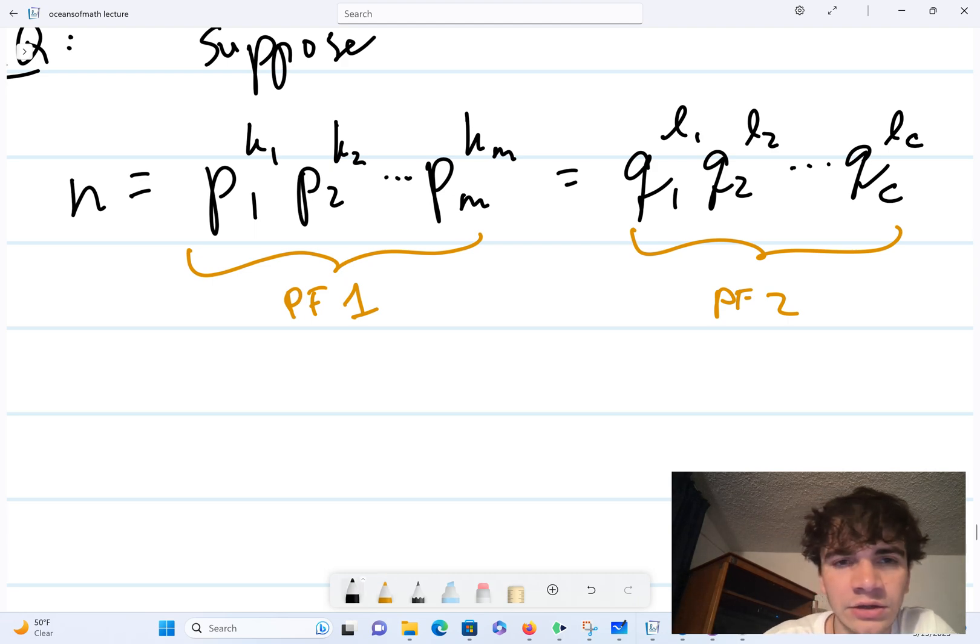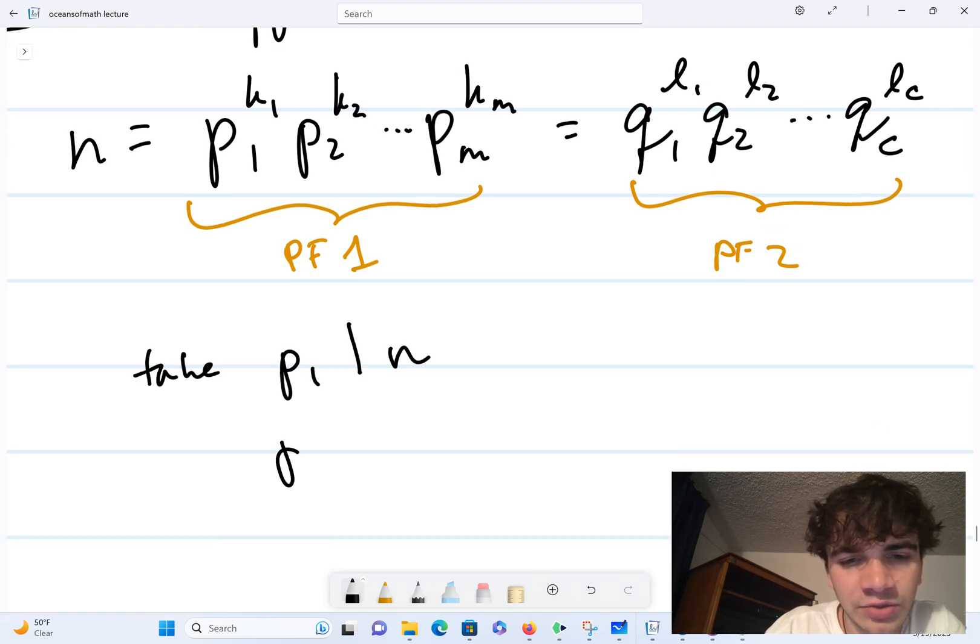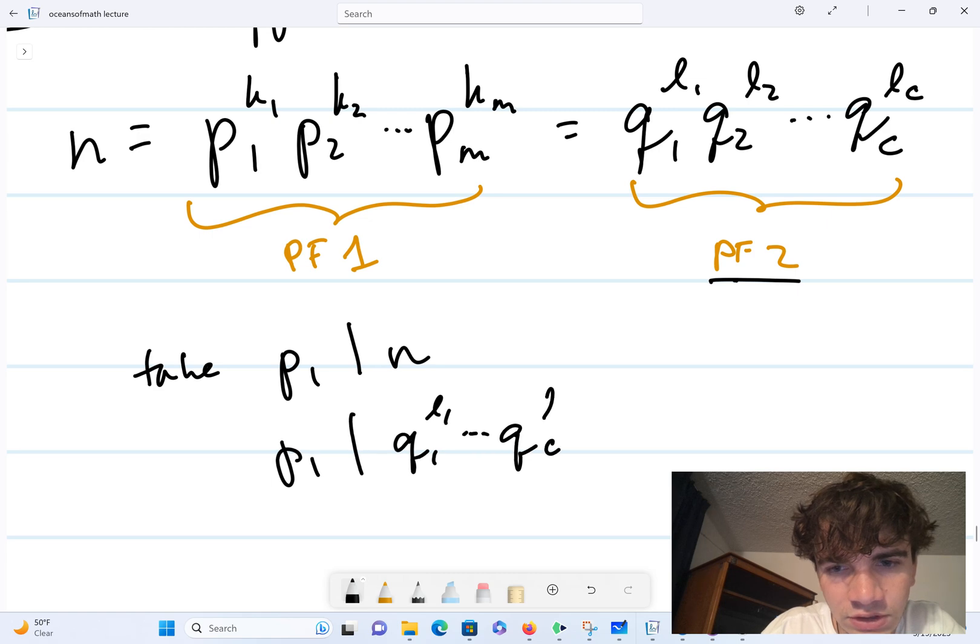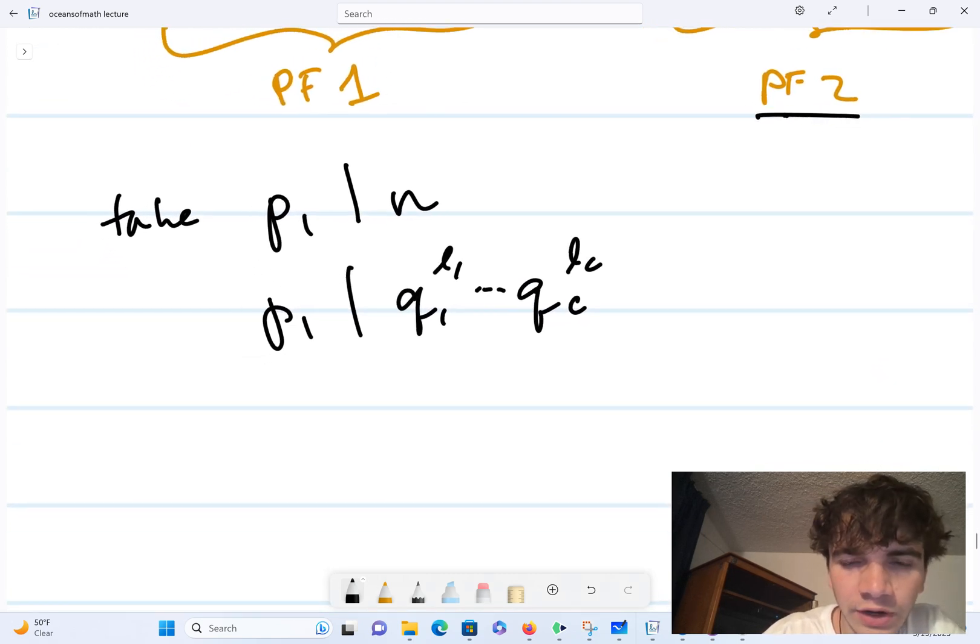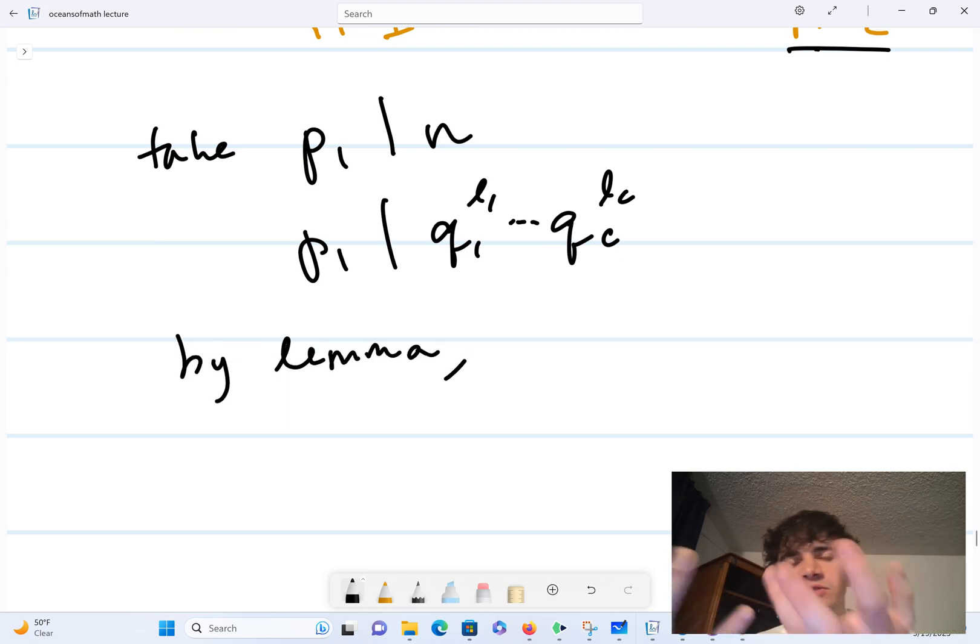So we have two different prime factorizations—here's prime factorization one and here's prime factorization two—and we're trying to show that they're equivalent. So take p1, which divides n, and in particular p1 divides this other prime factorization. So p1 has to divide q1^l1 dot dot qc^lc. But by the lemma...